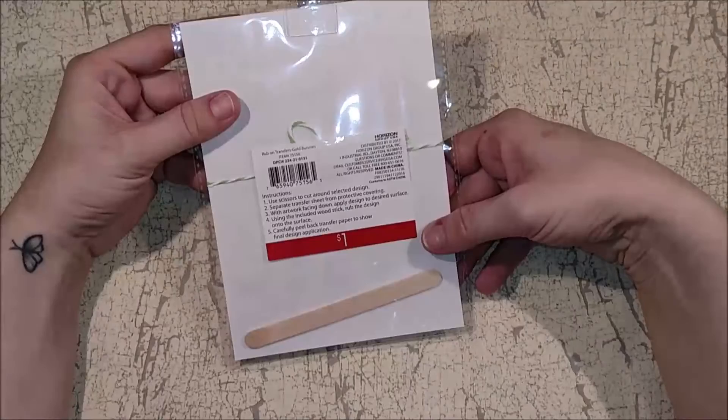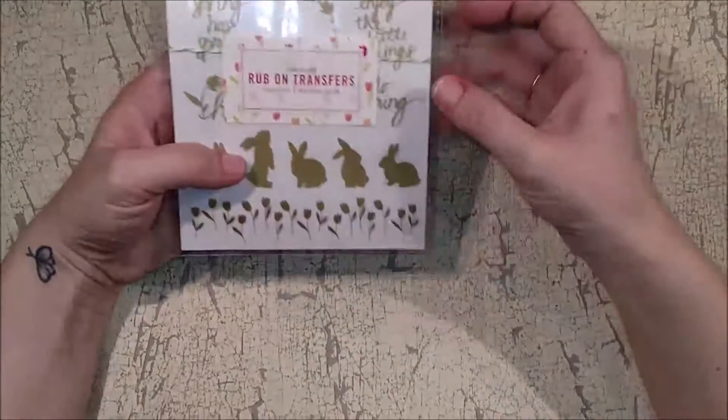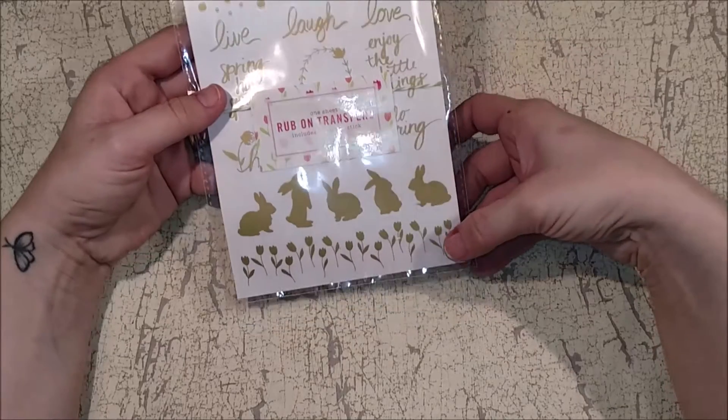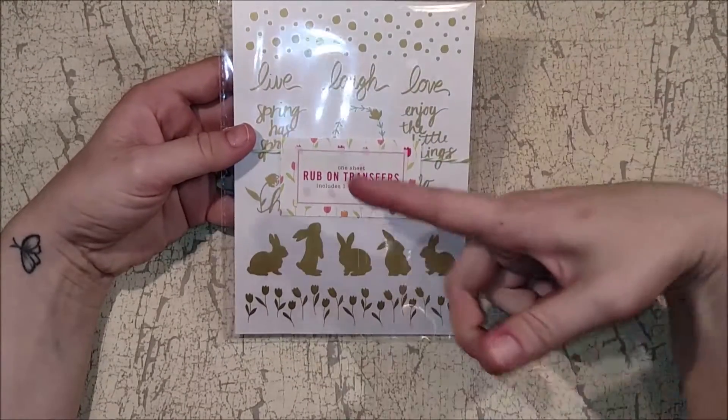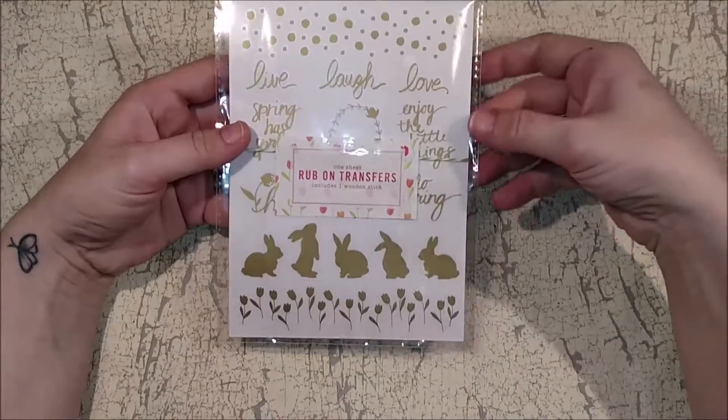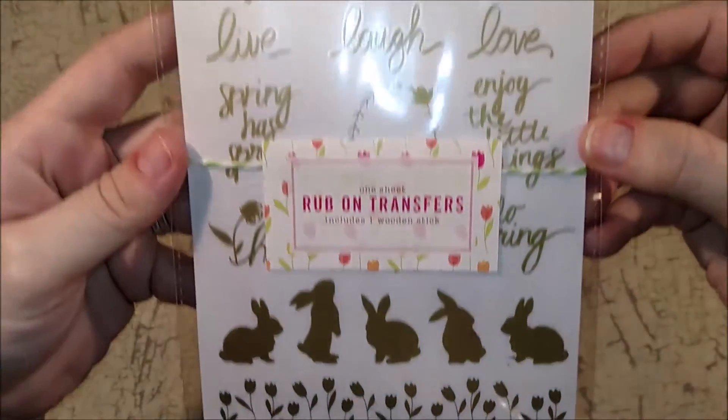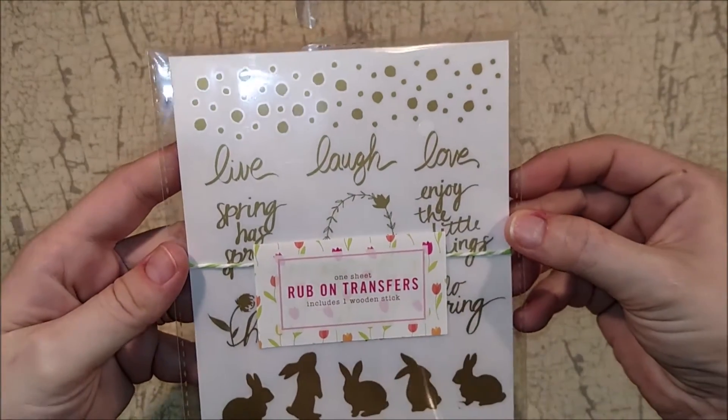These were a dollar. They are rub on transfers. And they're little gold bunnies and tulips and dots. And then they have like, enjoy the little things. Spring is sprung. Live. Laugh. Love. So, I thought I could use those somewhere. I want to get back to crafting. And I feel like I need new stuff to like, inspire me.